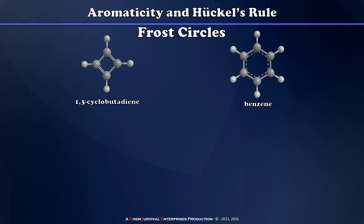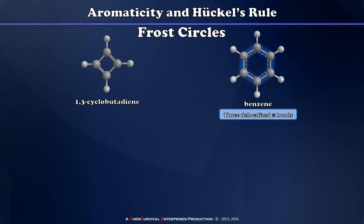In this depiction, 1,3-cyclobutadiene is shown as having two isolated pi bonds, while benzene is drawn with three delocalized pi bonds spread out over the entire ring, meaning each carbon-carbon bond is really more like a one-and-a-half bond than a double bond. To show why, I'm going to draw the Frost circles for 1,3-cyclobutadiene and benzene.